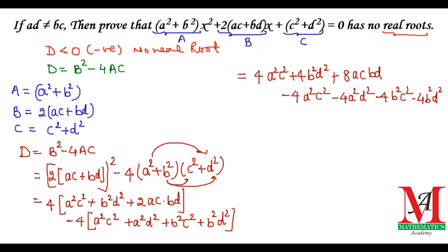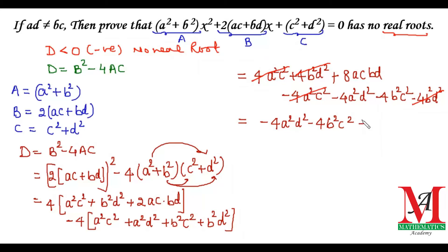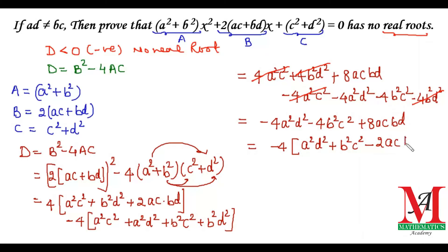Now we see that the 4a²c² positive and negative terms cancel with each other, and the 4b²d² terms also cancel with each other. We are left with three terms: minus 4a²d², minus 4b²c², and plus 8abcd. Taking minus 4 as common, we get minus 4 times (a²d² + b²c² - 2abcd).